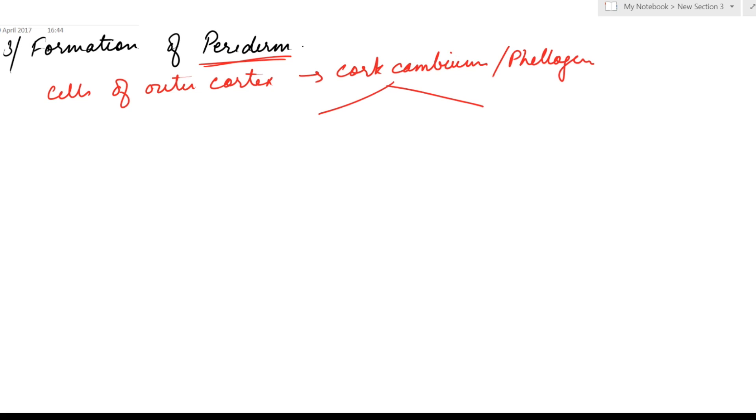The cork cambium behaves in the same way as the fascicular cambium. It divides periclinally to form two cells, of which one remains as the cambium cell and the other one differentiates either into the secondary cortex or into the cork cells. If differentiation occurs towards the inner side, it is secondary cortex. If differentiation occurs towards the outer side, it is cork cells.